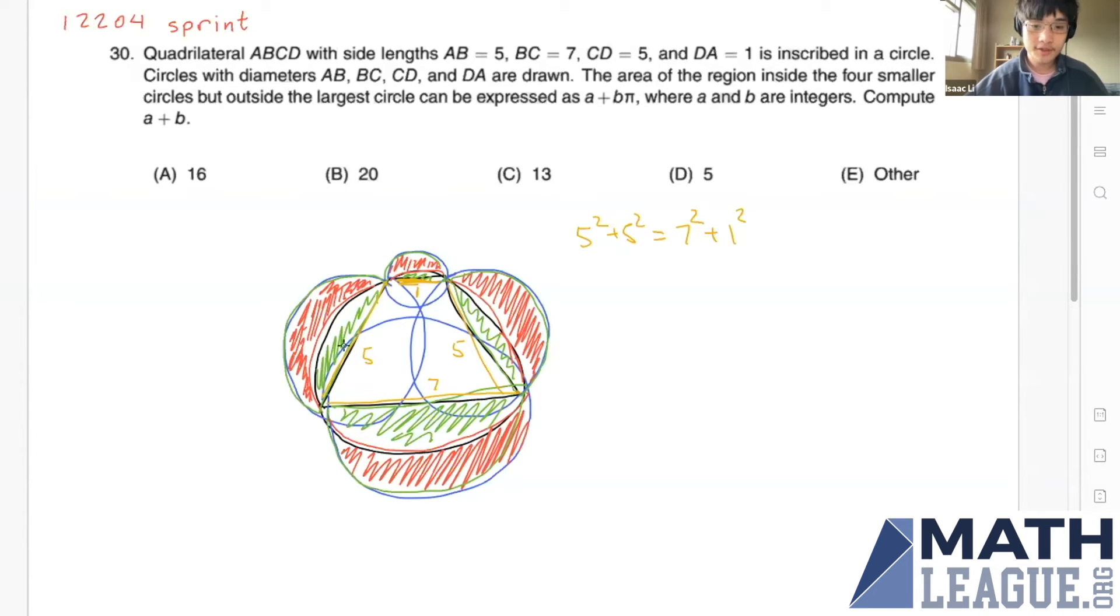So basically, if we swap two of these side lengths to get a different quadrilateral, then what we get is a side length that is five here, and then five here, and then one here, and then seven here. And this quadrilateral is cyclic. And since five squared plus five squared equals seven squared plus one squared, we must have that these are right angles here.